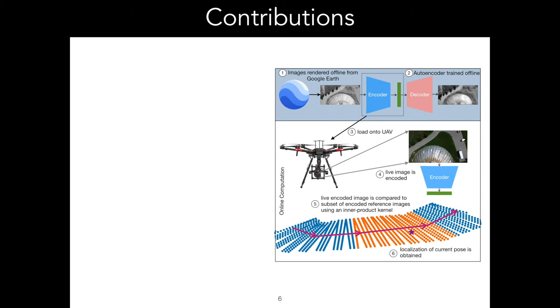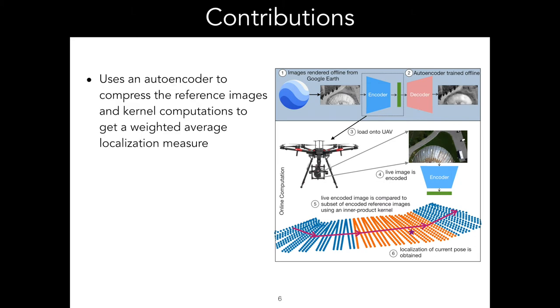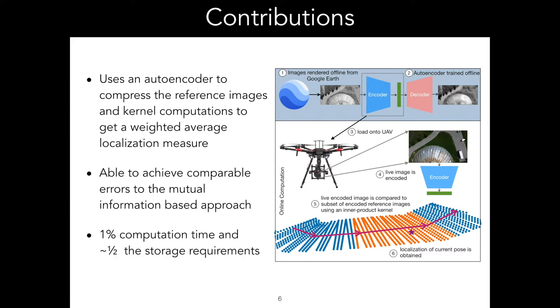With this work, we were able to come up with a new method that uses an autoencoder to compress all the reference images and inner product kernel computations to compute a weighted average and get a localization result. We were able to achieve very similar performance errors as the mutual information approach, but we were able to do it in one percent of the computation time and approximately half the storage requirements.